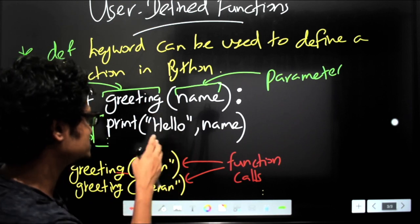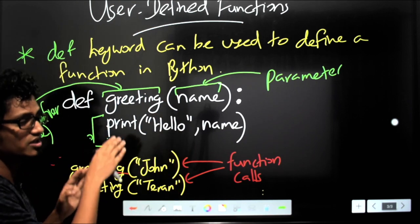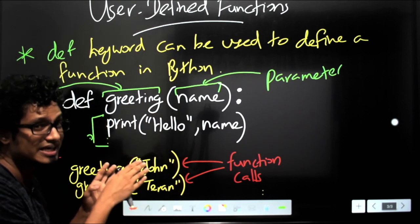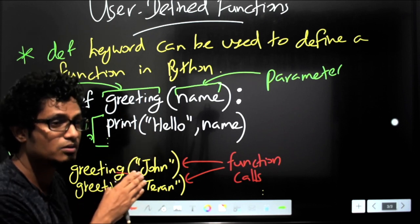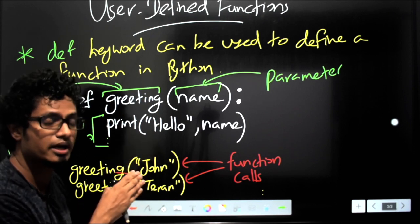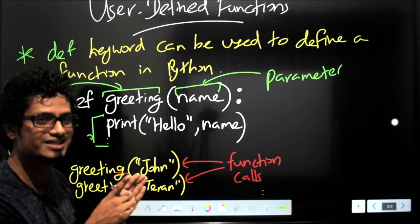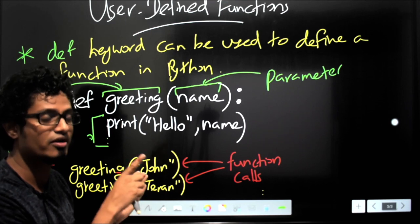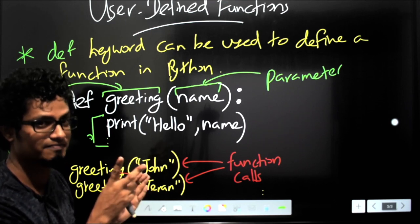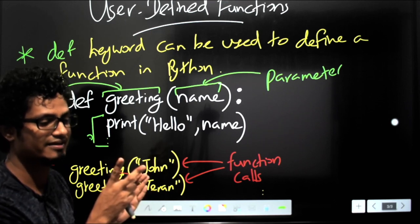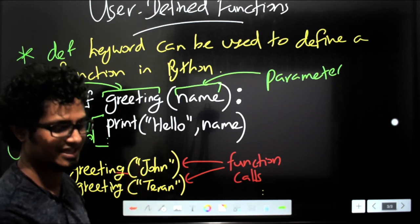This is the very basic of how to define a user-defined function in Python. This function is a non-return type function. We have return type functions and non-return type functions — two types of functions. Let's learn that in the next video. Bye.